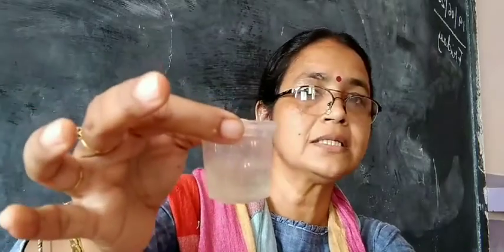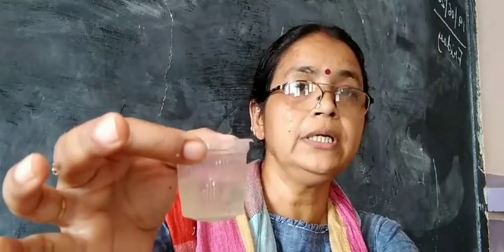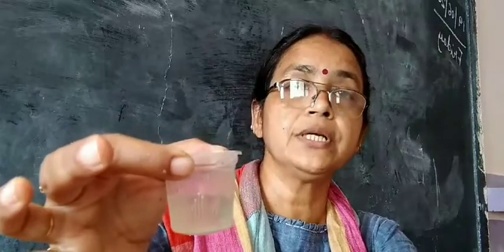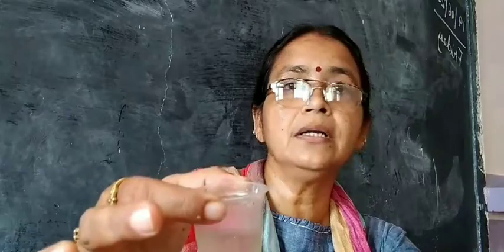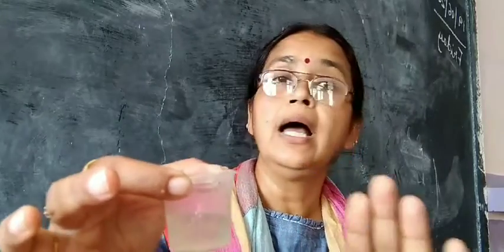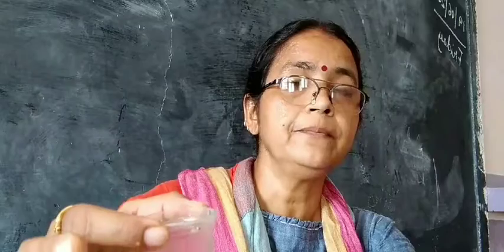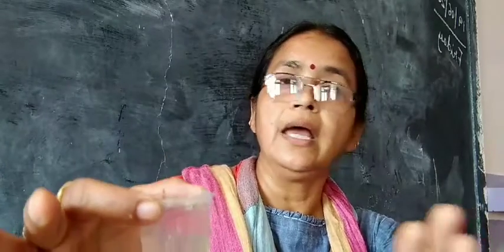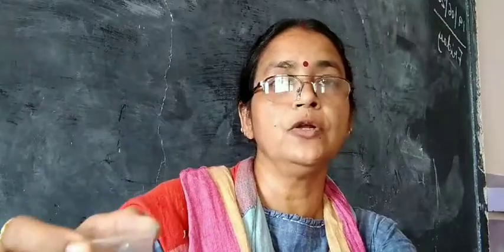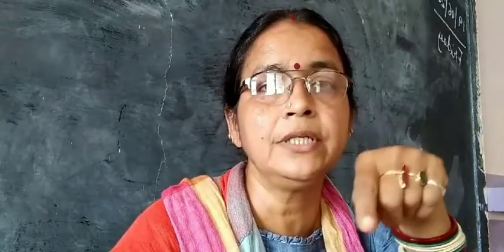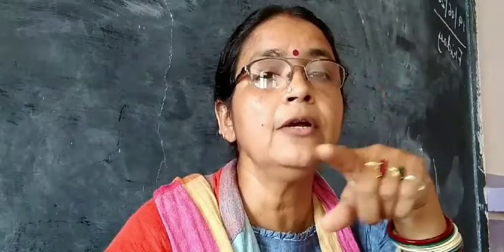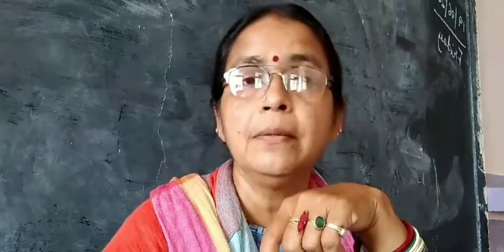It is not necessary that solubility can be checked in water only — it can be checked in other liquids also. So sand is insoluble and sugar is soluble. You can check with other things at home, taking different liquids as solvent and different solid particles as solute. The activity we saw was regarding the property of solubility of materials.